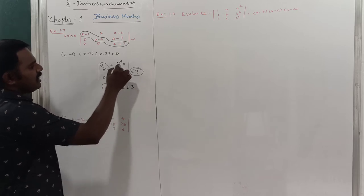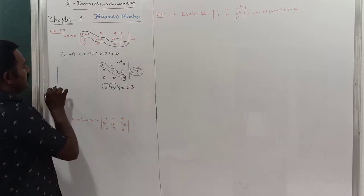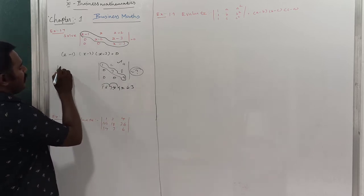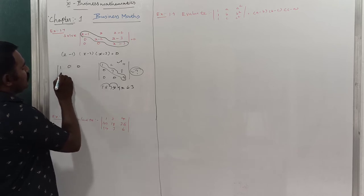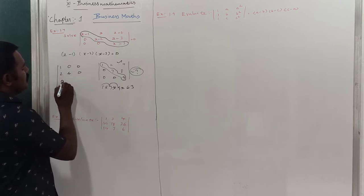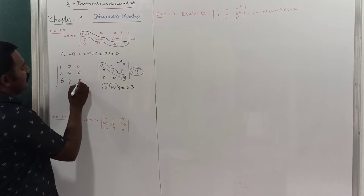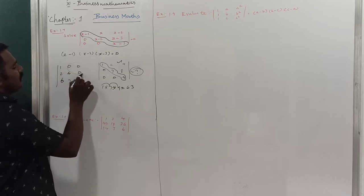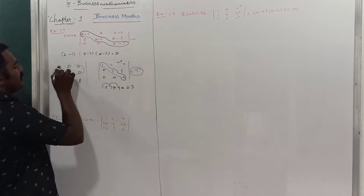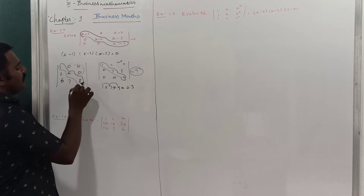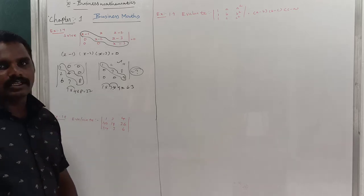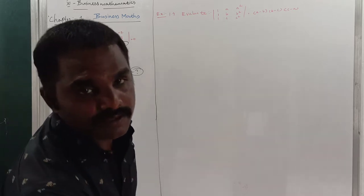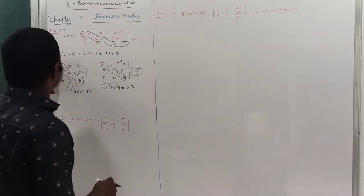Therefore, 63 is the answer for that determinant. Not only upper triangular, but lower triangular matrices also follow this property. For example, consider [1, 0, 0; 2, 4, 0; 6, 7, 8]. The value of the determinant is 1 × 4 × 8 = 32. This is one of the important properties of determinants.